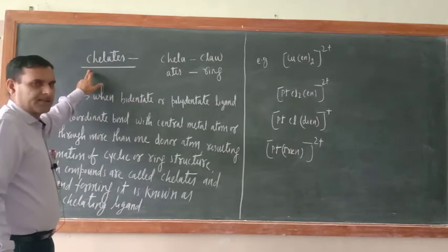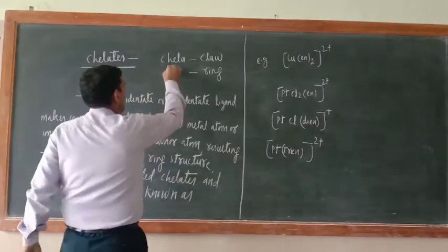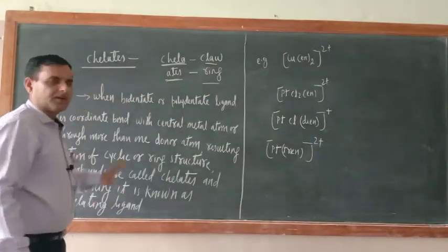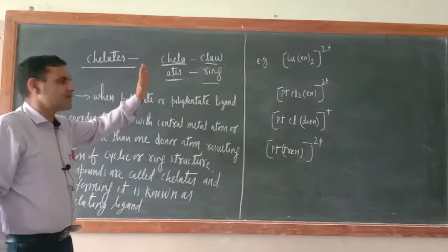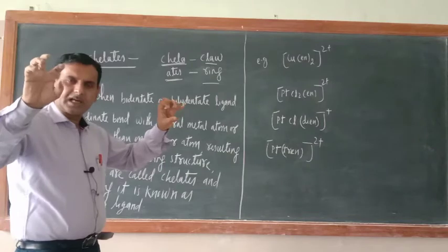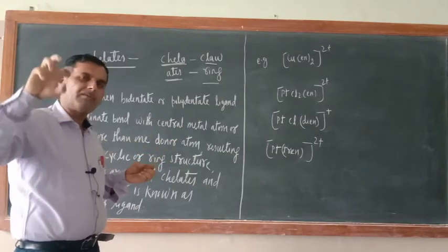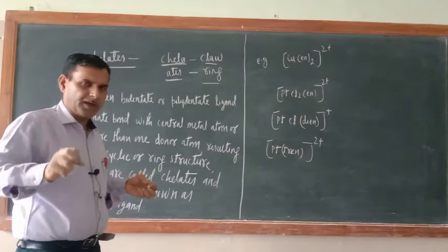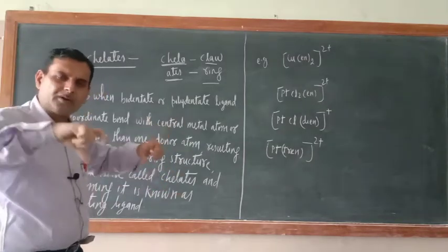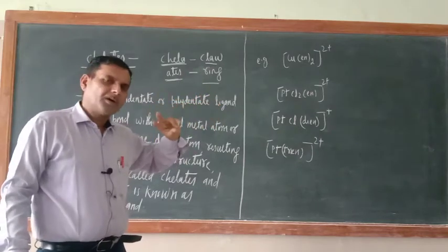The next topic is chelates. What is the meaning of chelates? Chelates is actually a Greek word made up of two words: 'chela' and 'aids'. Chela means claw and aids means ring. So chelates means claw forming ring. Ligands are forming the ring when they have more than one donor site and form coordinate bonds with the central metal atom, creating a ring-like structure.